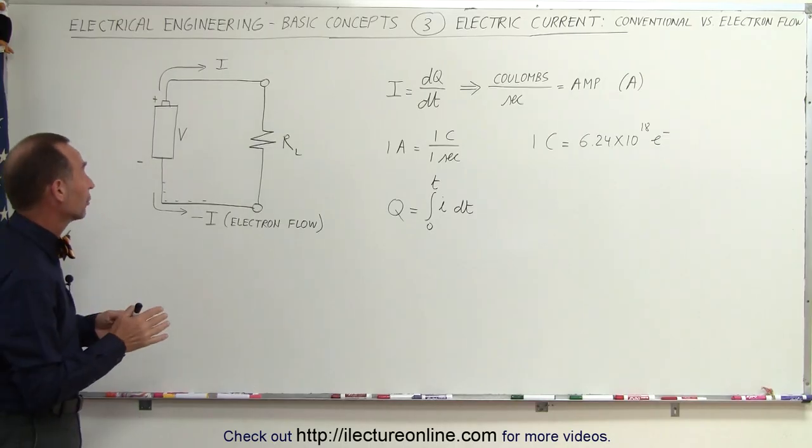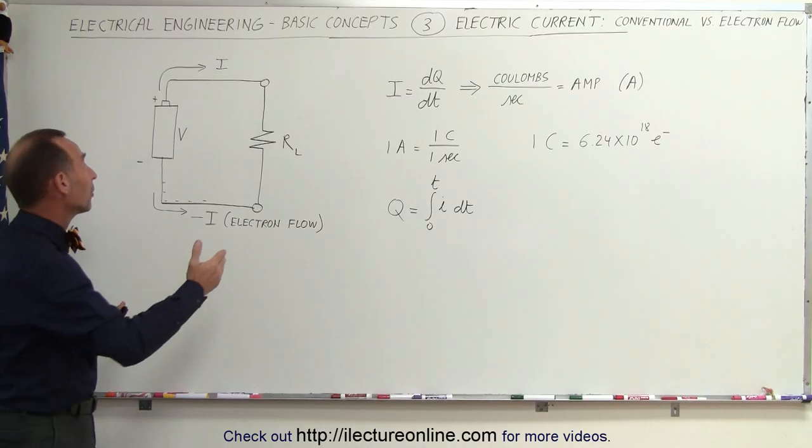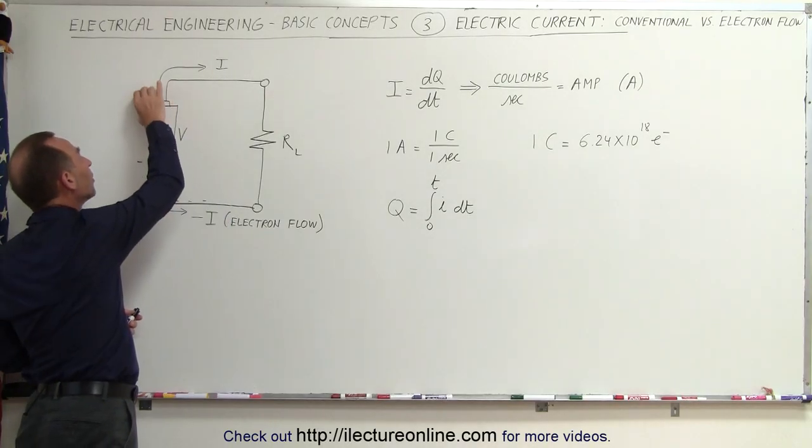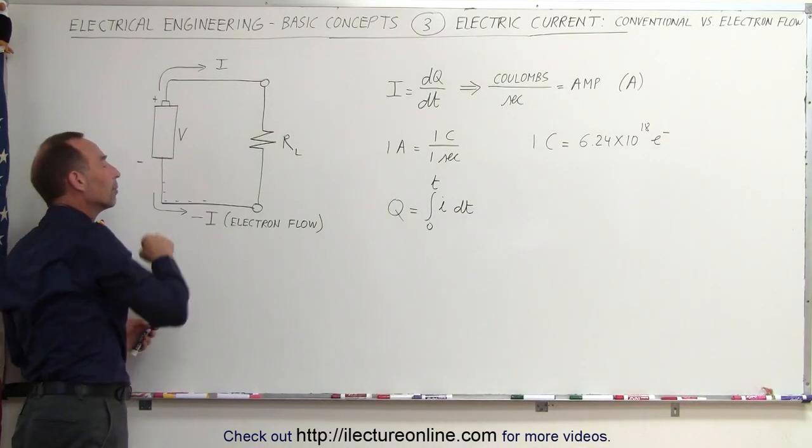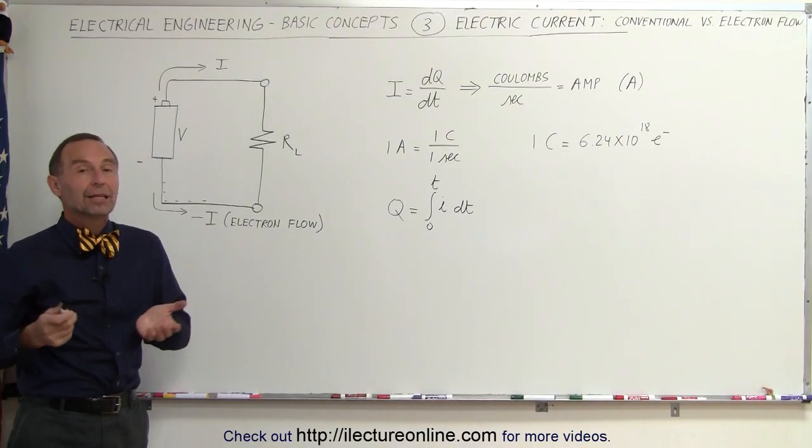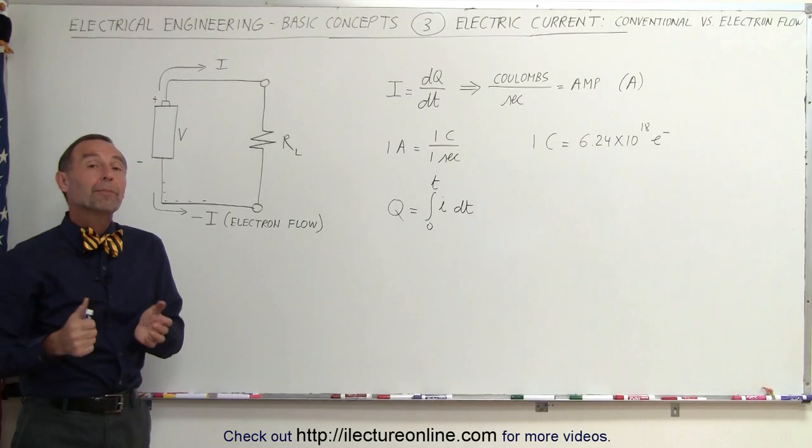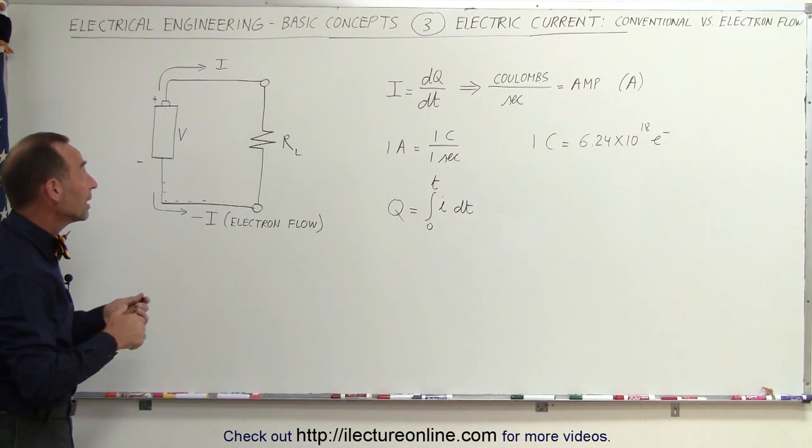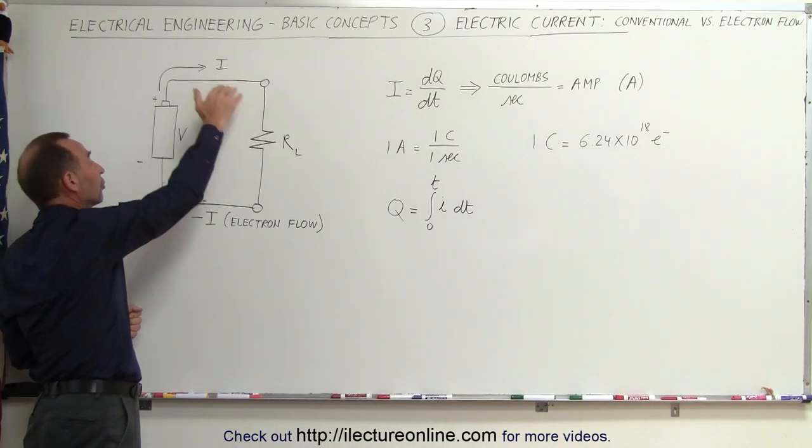Well, the conventional direction of the current is that current flows from a power source and from the positive end of the power source to the negative end of the power source. That's the conventional current. That's basically the current concept set up by Benjamin Franklin. He claimed that there's positive charges flowing through the circuit.